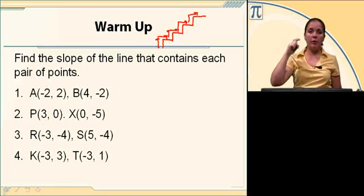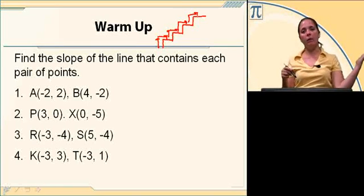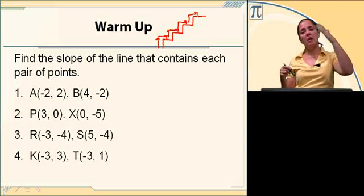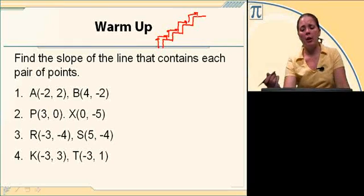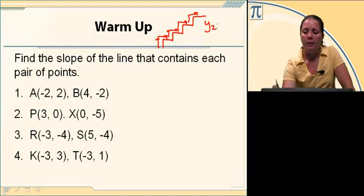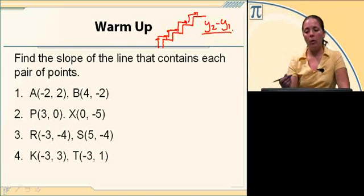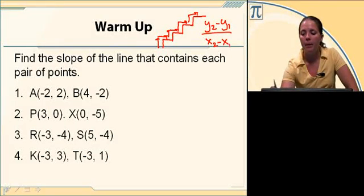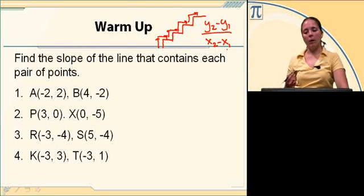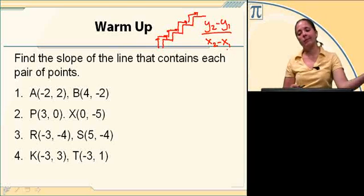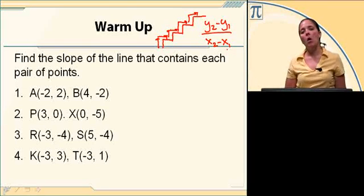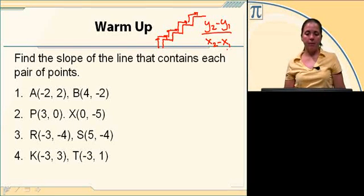If you think about climbing stairs and you do run over rise, you're going to fall flat on your face — kick your foot over and then lift it up, you're not going to be able to make it up the stairs. So it's always rise over run, or the change in the Y's, Y being our vertical coordinate and X being our horizontal coordinate. It's the change in Y's over the difference of X's to find our slope.